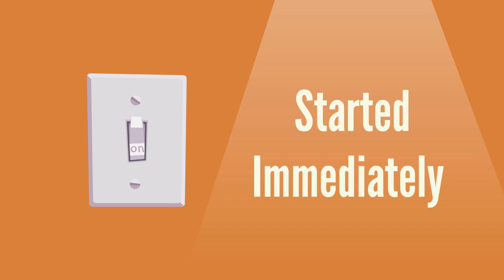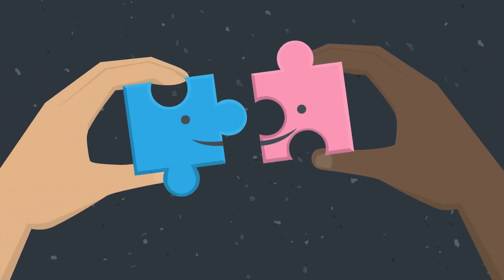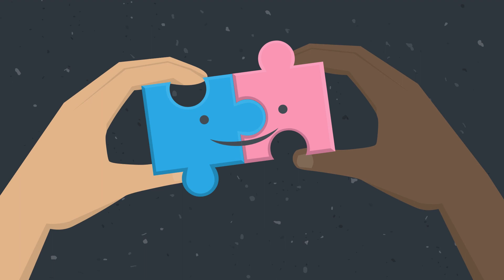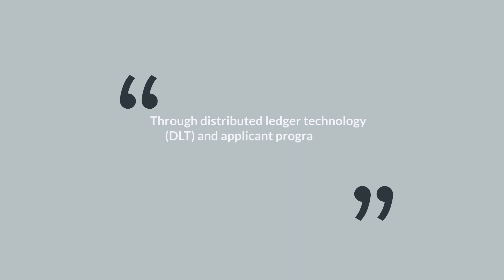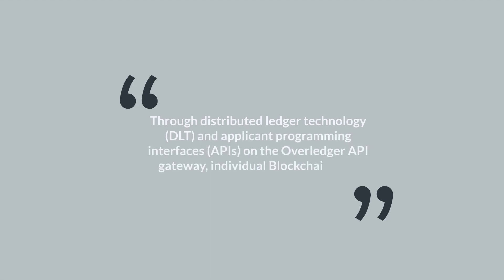Quant is a solution that can be plugged in and started immediately, and it integrates several blockchains and corporate applications without the need for new infrastructure. Through distributed ledger technology (DLT) and application programming interfaces (APIs) on the Overledger's API gateway, individual blockchains can connect with one another.